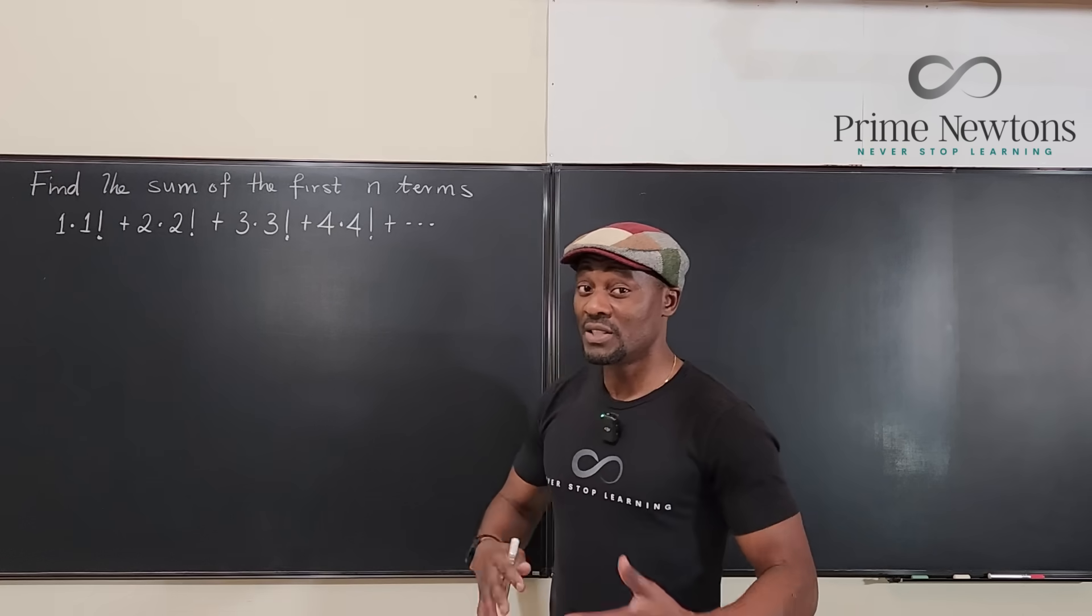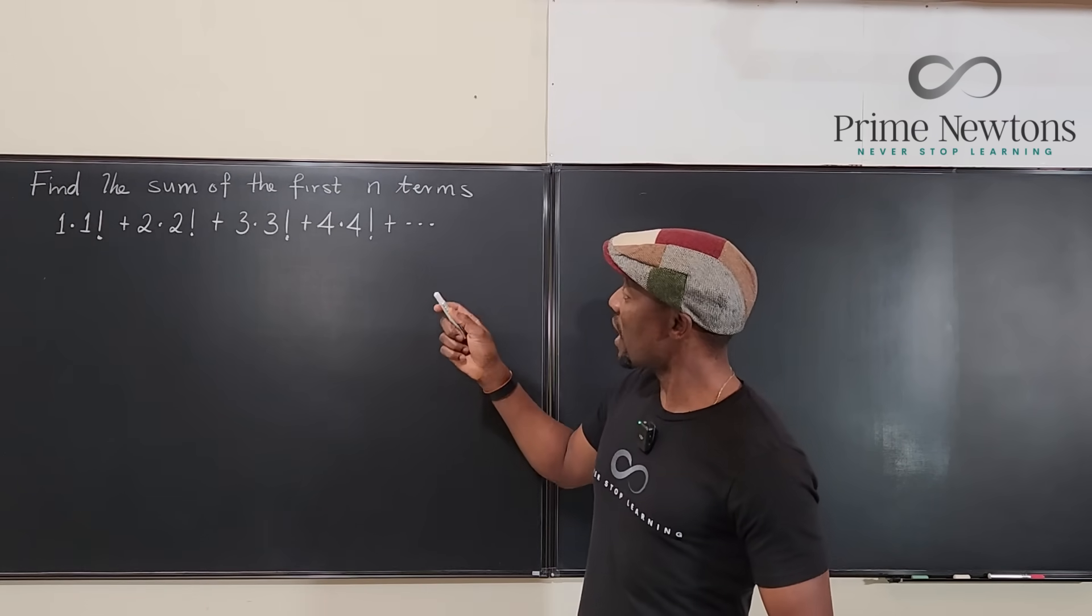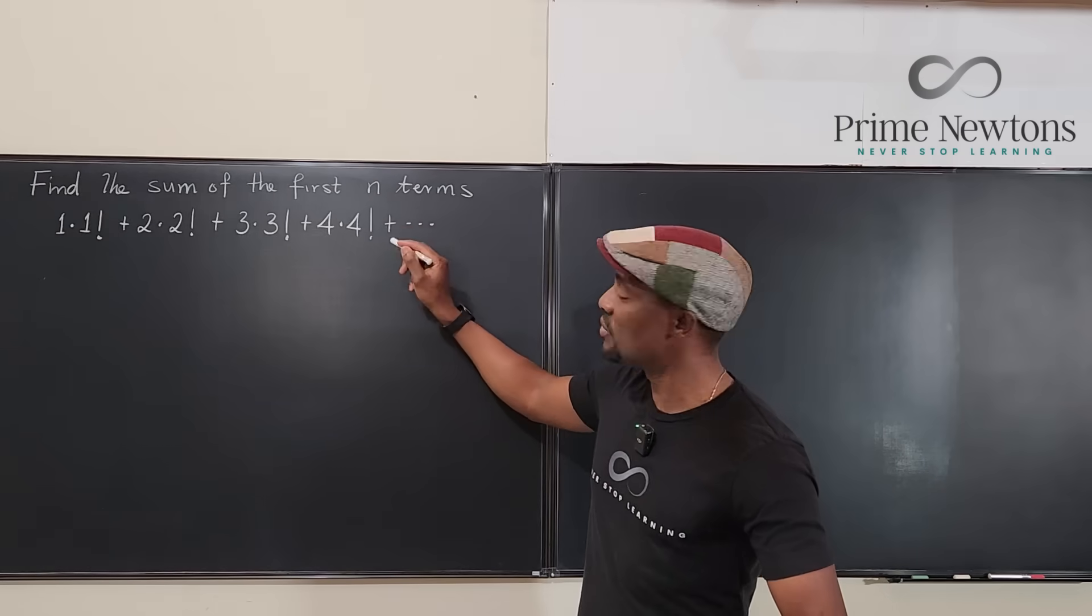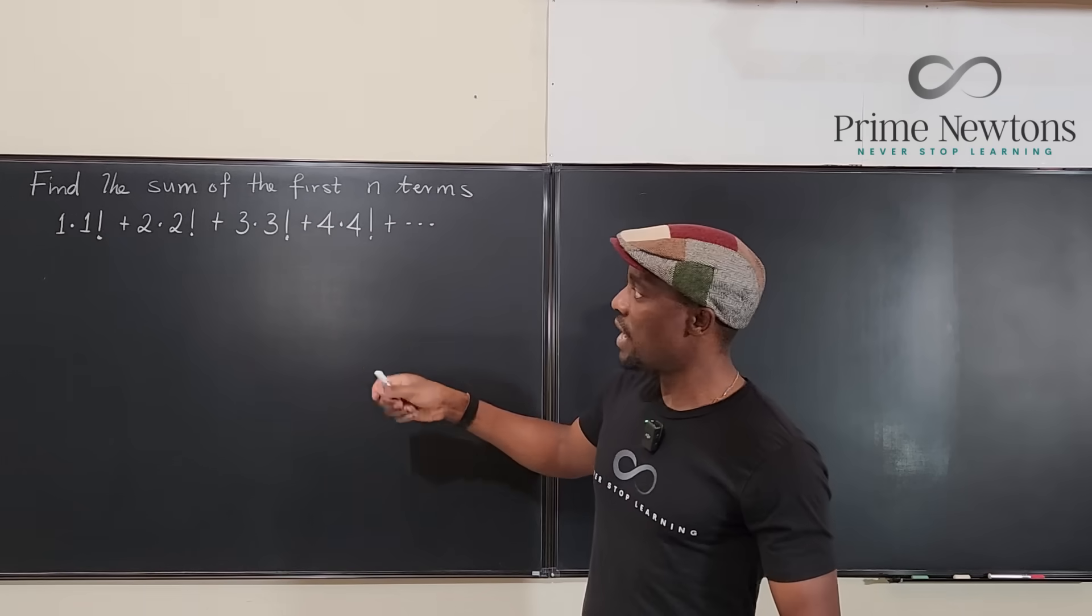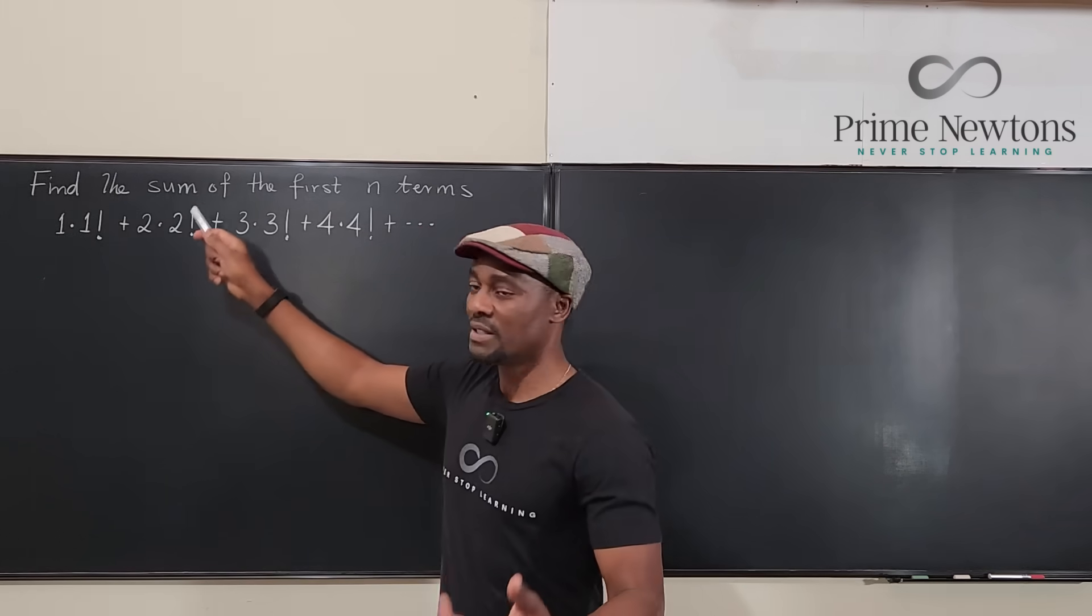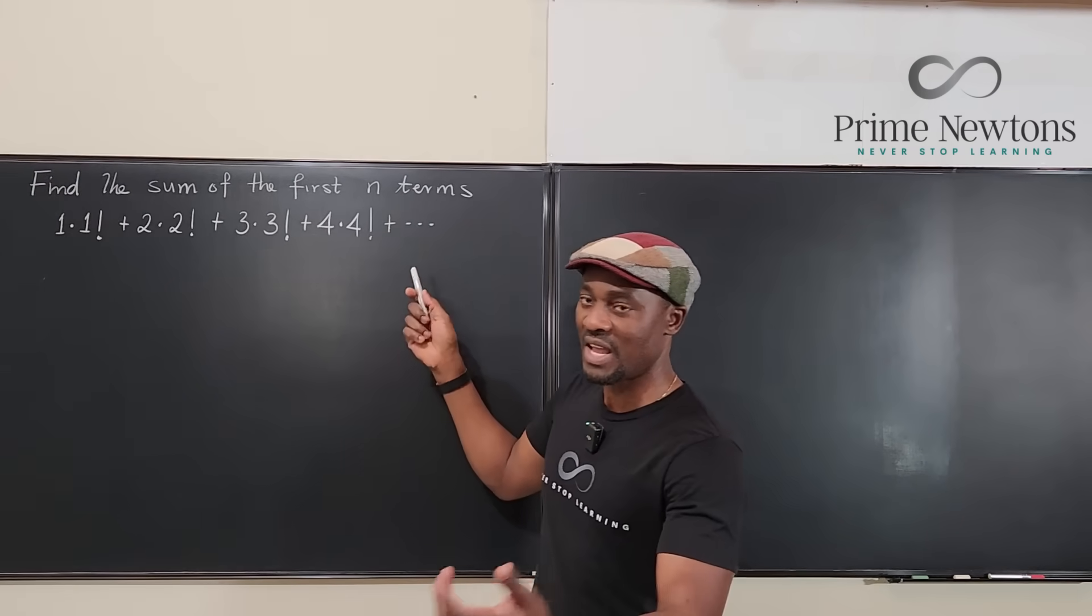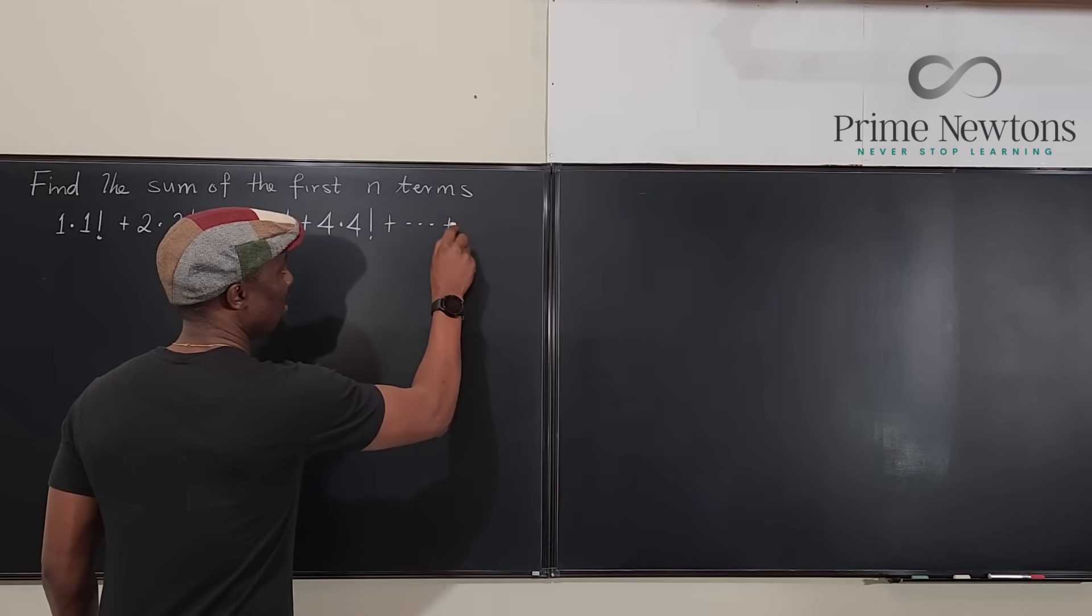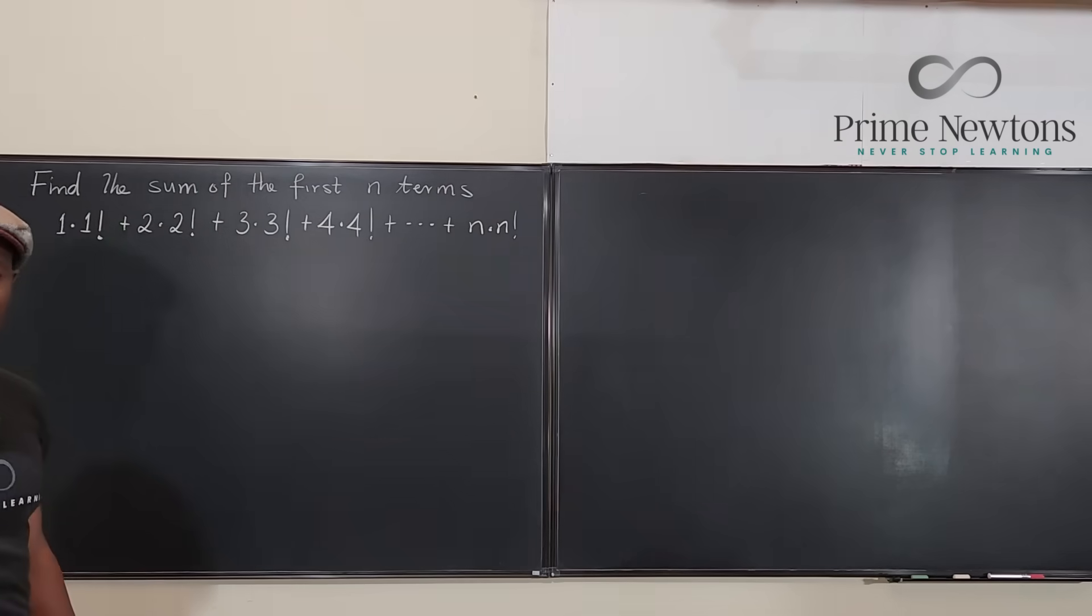So whenever you have a sum task like this for an infinite series, and you want to have the sum of a finite number of terms, the first thing is you want to know what is the nth term. And this is obvious because the first term is 1 times 1 factorial, second is 2 times 2 factorial. So the nth term is going to be n times n factorial.